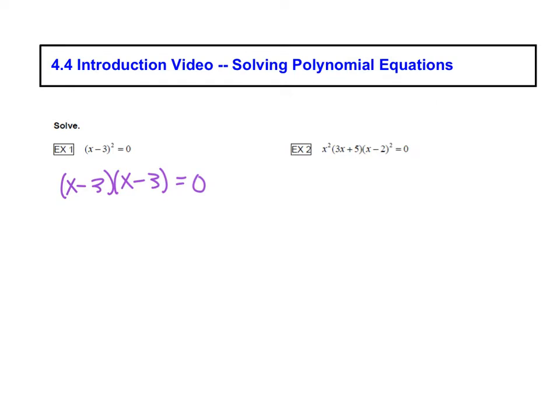So once you get it broken down into factored form, then we have, it's called a zero product property. If you multiply two things, in this case an X minus 3 by an X minus 3, if you multiply those together and get zero as your answer, that means that either the X minus 3 equals zero or the other X minus 3 equals zero.